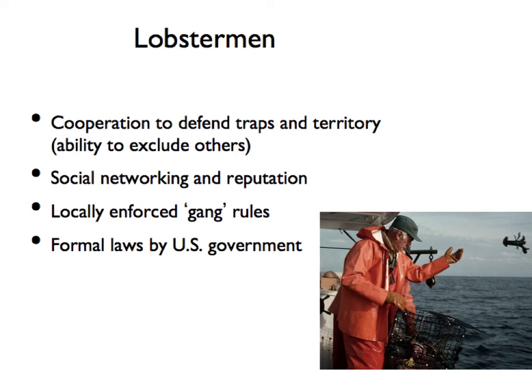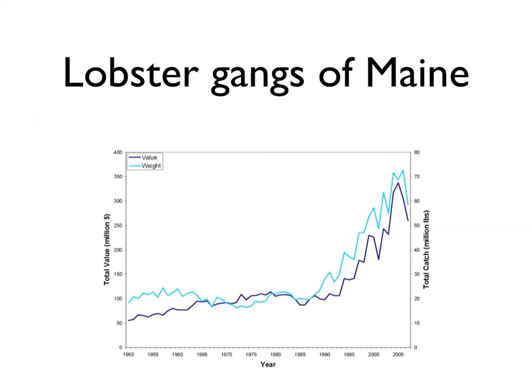By keeping track of everybody, they've essentially imposed accountability and changed the game, making it make more sense to participate and cooperate than not. You can see the result: the total catch, shown here starting in 1950, has gone from about 20 million pounds up to between 60 and 70 million pounds. They've nearly quadrupled the pounds of lobster caught by restricting size limits and working together to ensure everyone restricts their size limits. This shows that we can solve the tragedy of the commons through mechanisms that change the game.